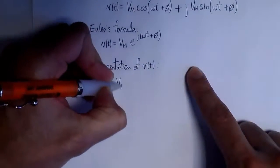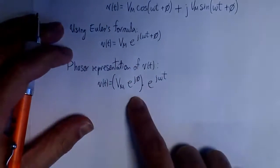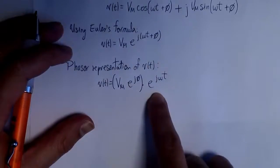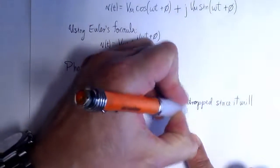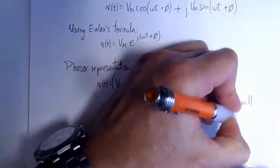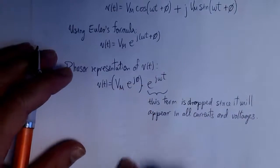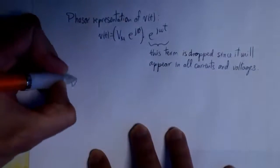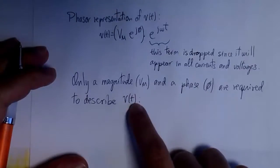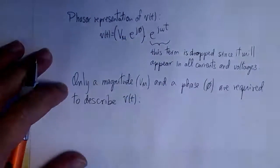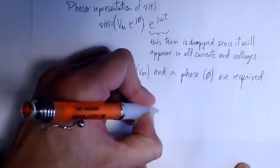We can take the expression for the complex exponential and express it differently, just by separating the exponentials: Vm times e^(jφ) times e^(jωt). The term e^(jωt) is usually dropped from the phasor representation because it will appear in every current and every voltage that we find. So we remove it since it's always going to be there. If we remove e^(jωt), then V(t) can be described with just a magnitude Vm and a phase angle φ.